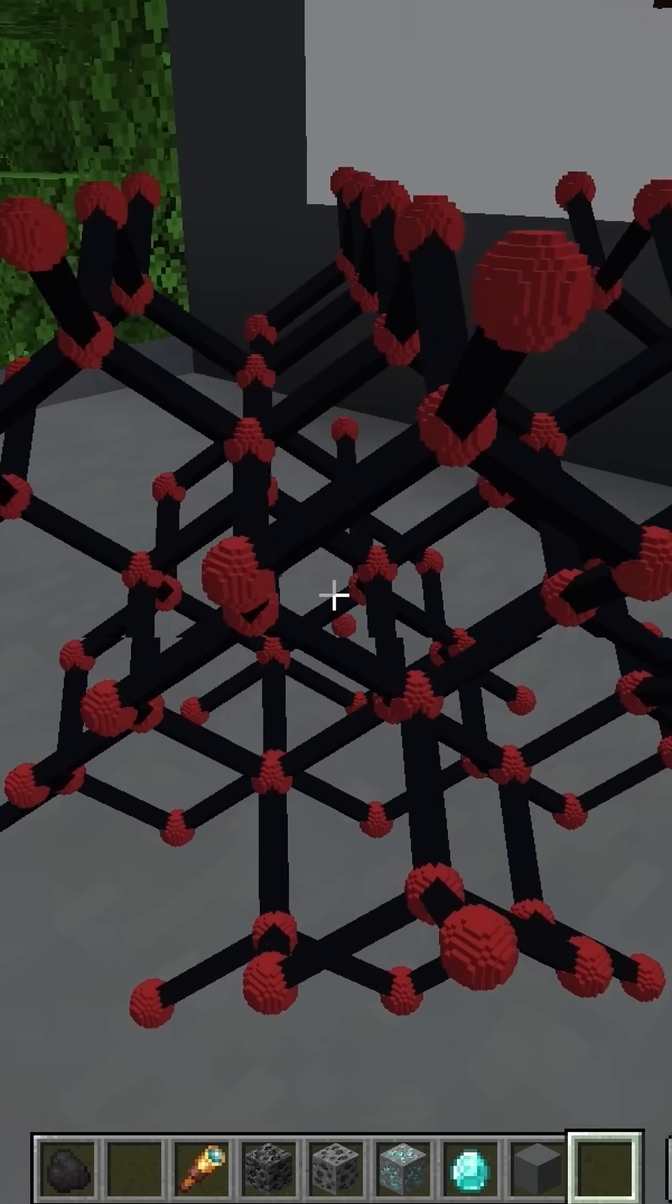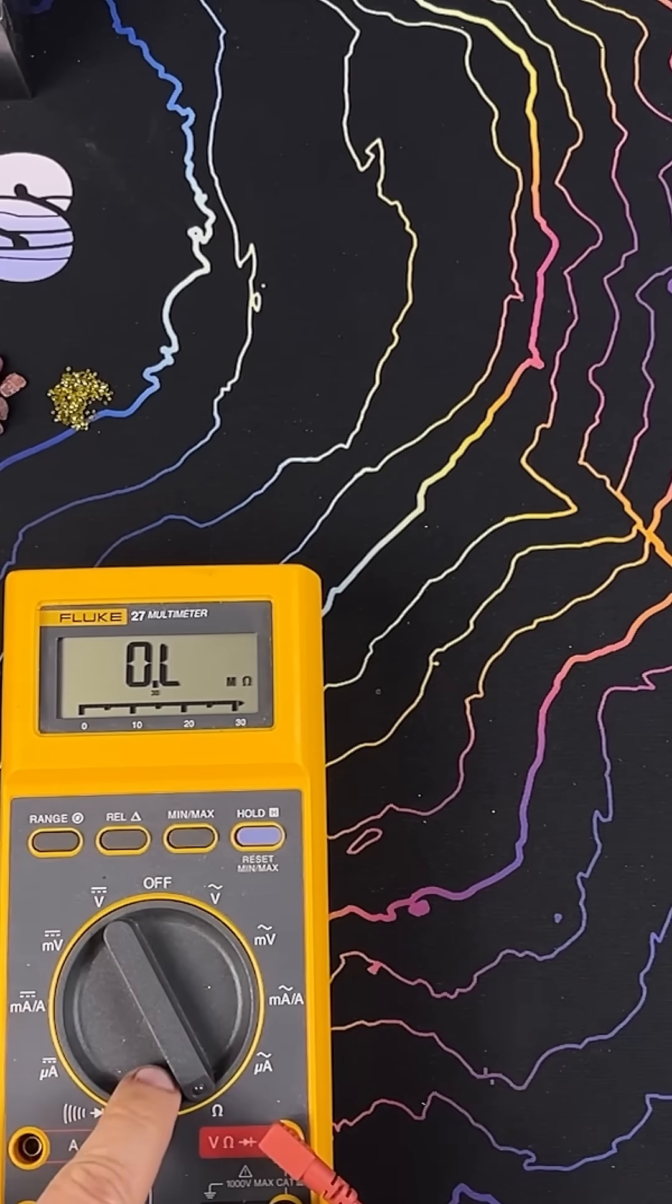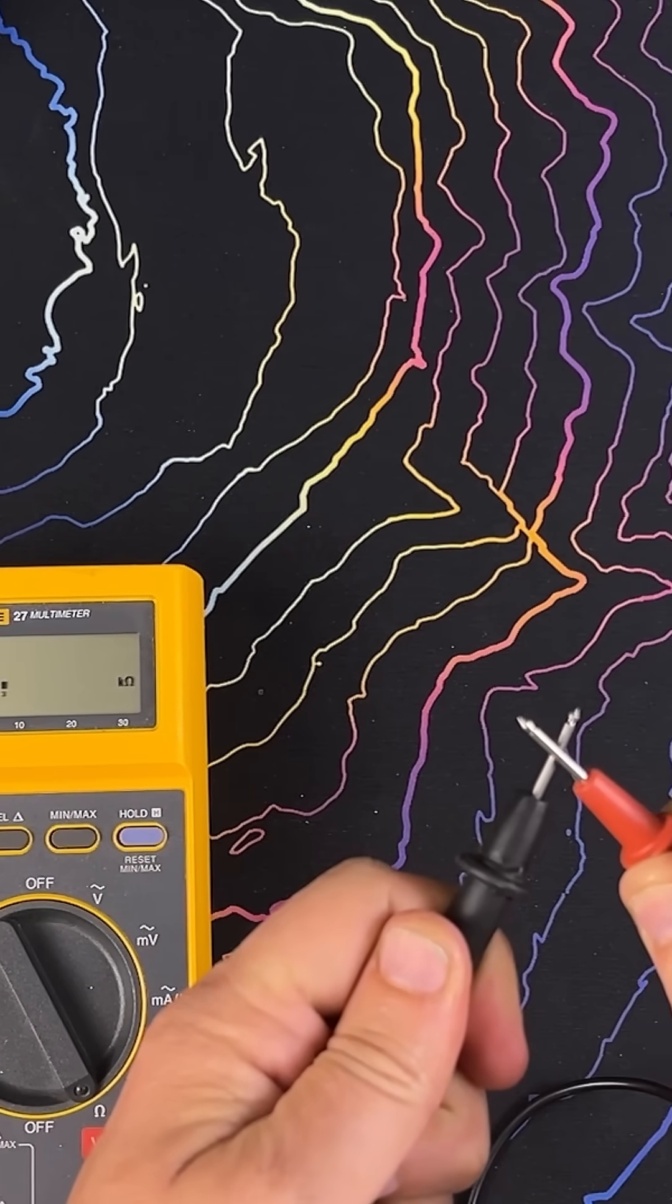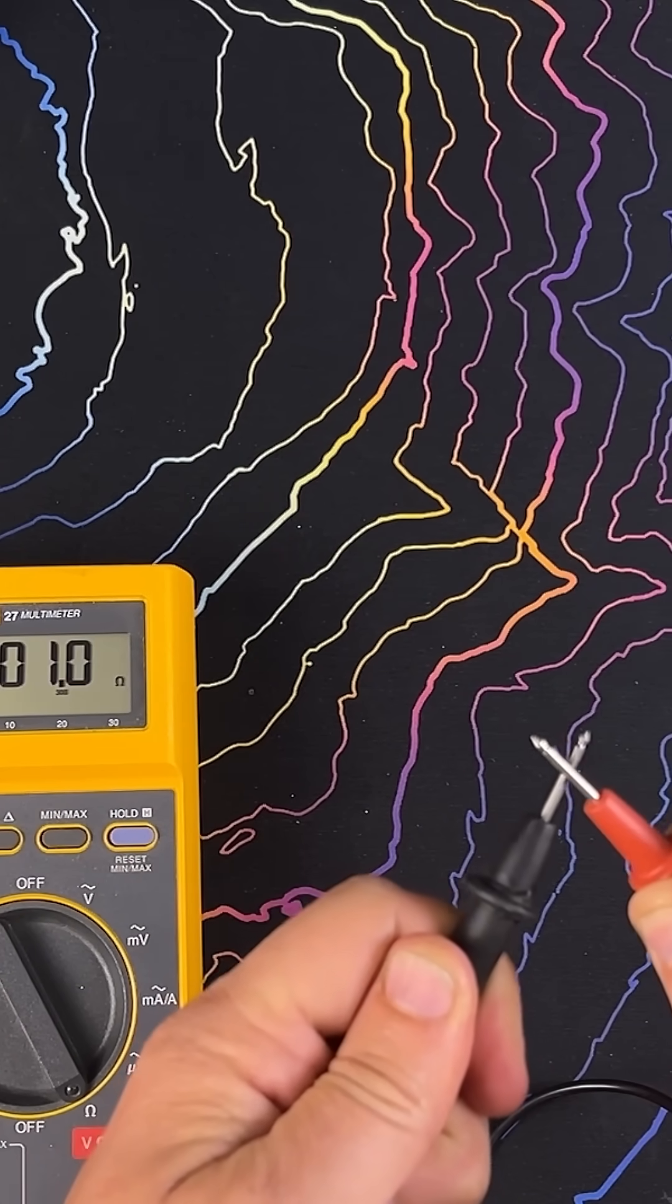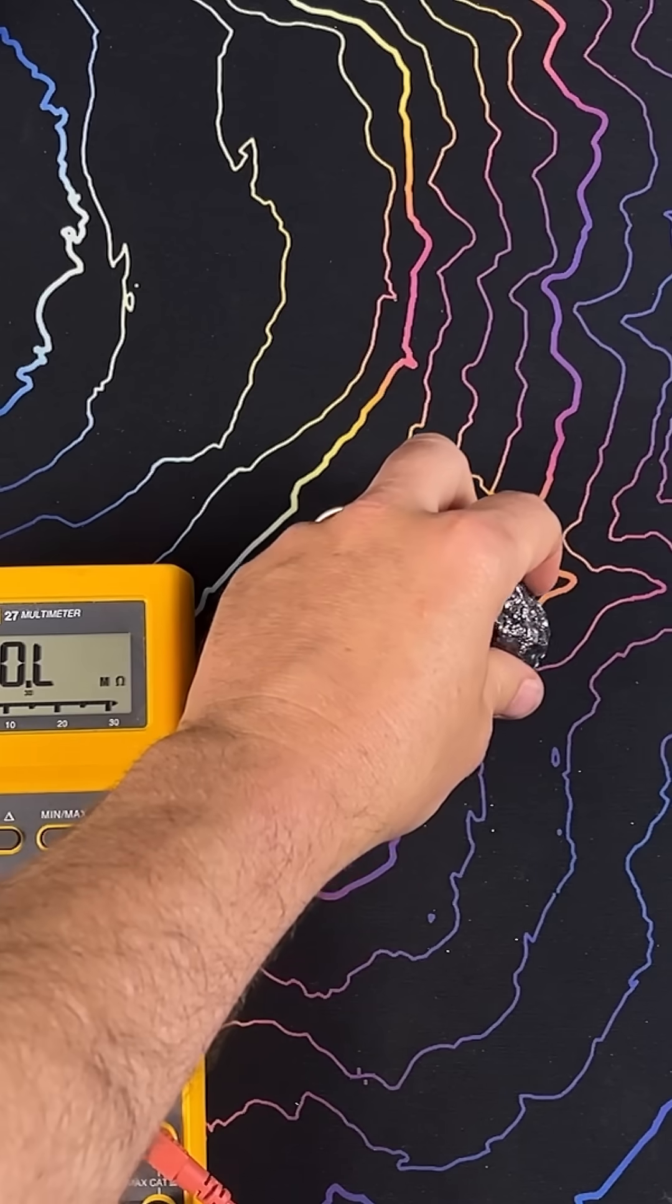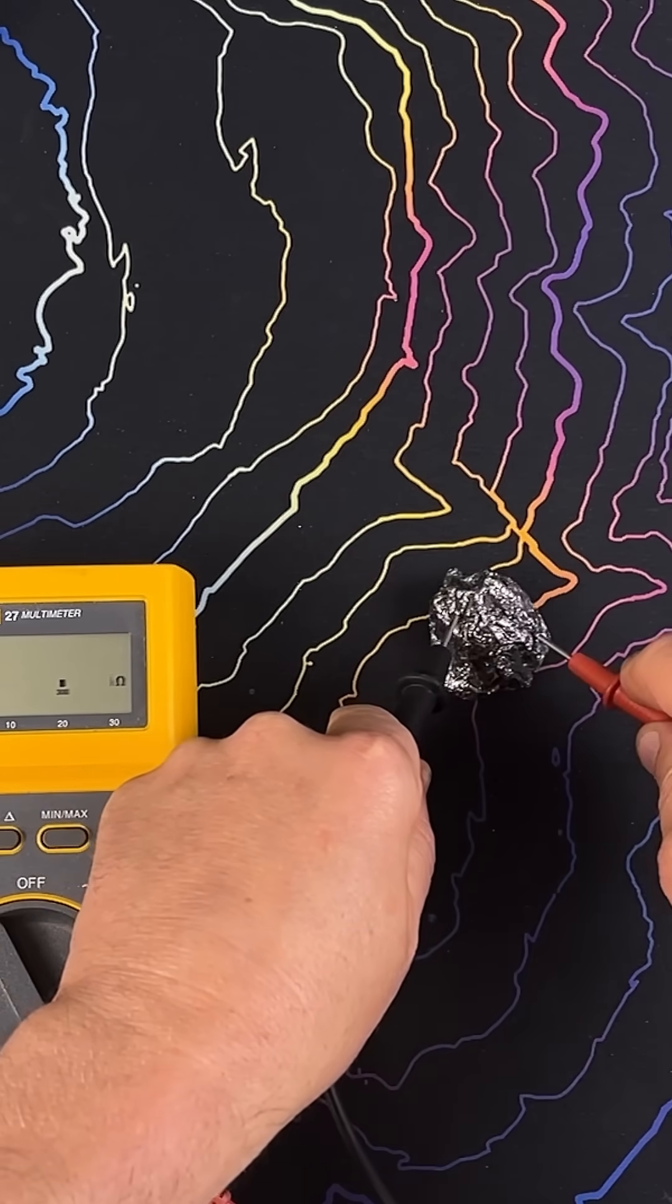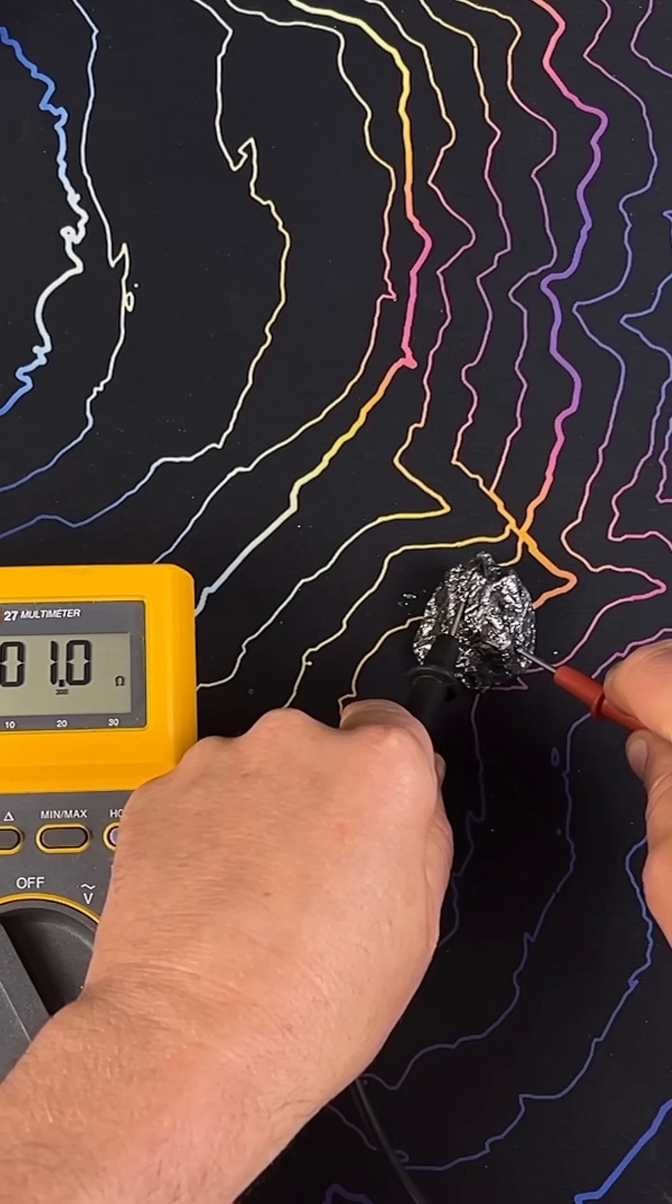We can actually see this electrically. This is a multimeter reading resistance. If I take the two leads and touch them together, you can see that resistance goes down. Here's that piece of graphite from earlier. I put the leads on it, it's also conductive because of that one free electron.